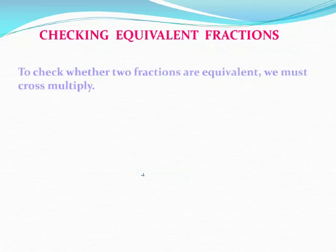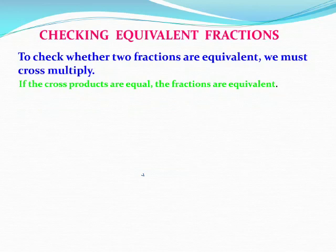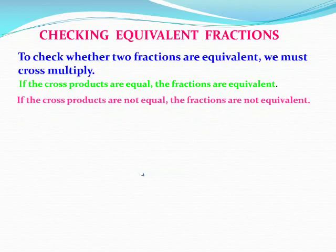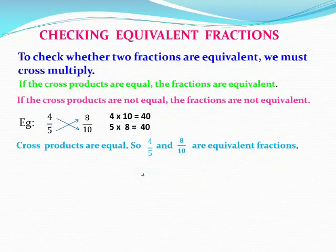Next, checking equivalent fractions. That means if two fractions are given, we have to check whether they are equal or not. To check whether the two fractions are equivalent, we must cross multiply. If the cross products are equal, the fractions are equivalent. If they are not equal, the fractions are not equivalent. Let us take one example: 4 by 5 and 8 by 10. Cross products are 4 times 10 equals 40, and 5 times 8 equals 40. Both cross products are equal, so 4 by 5 and 8 by 10 are equivalent fractions.